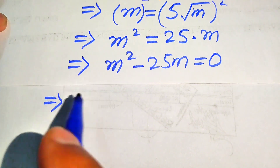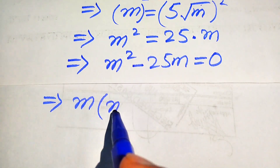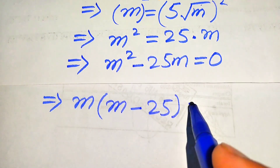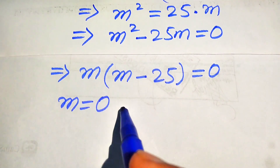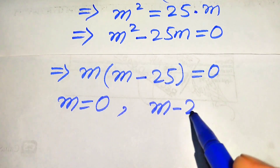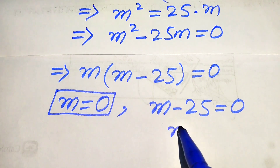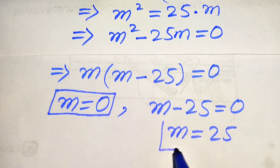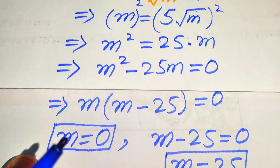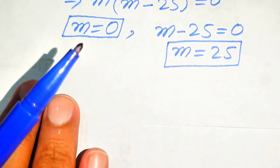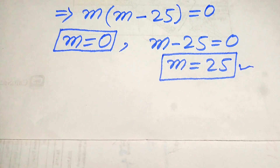Both terms involve m, so we factor out m: m times (m minus 25) equals 0. Breaking into two cases: the first case gives m equals 0, and the second case gives m minus 25 equals 0, so m equals 25. These are the two roots from Method 2. We already verified m equals 25 satisfies the equation in Method 1, but we still need to verify m equals 0.